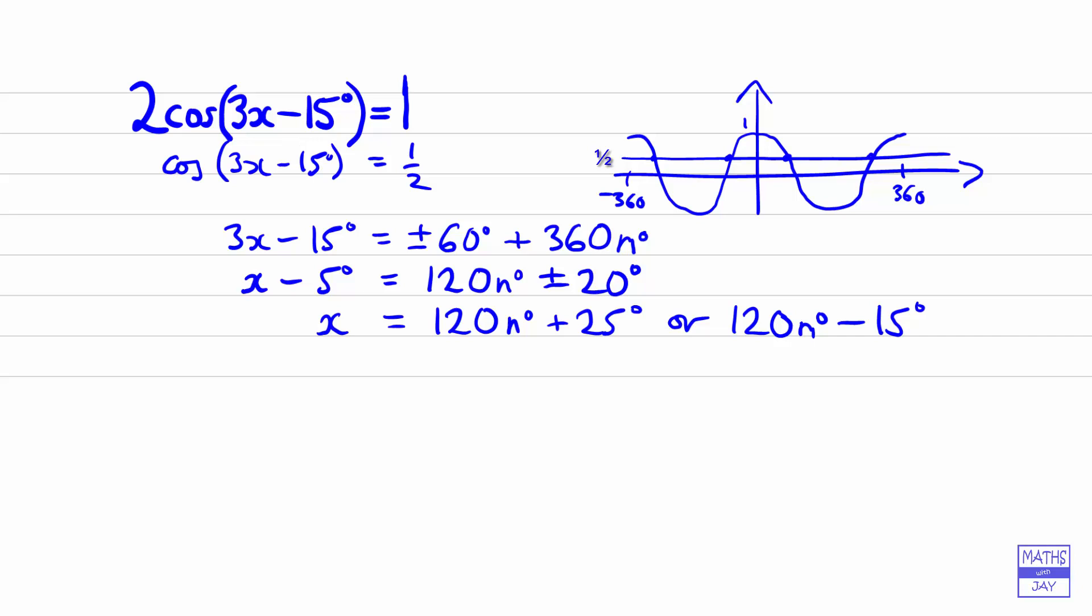And then check another value for n, maybe n equals 3. So when n is 3, we're going to get 120 times 3 plus 25, so that would be 385. Then we would take 15 away, find the cosine, double it, and hopefully you get one. Similarly, you would do the same sort of thing for 120n minus 15.